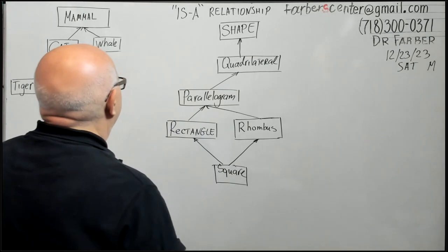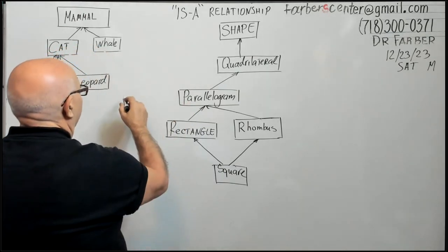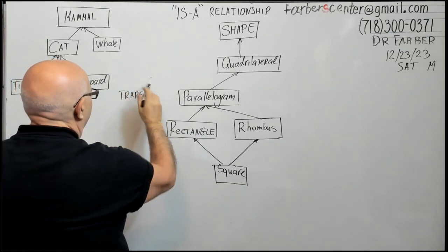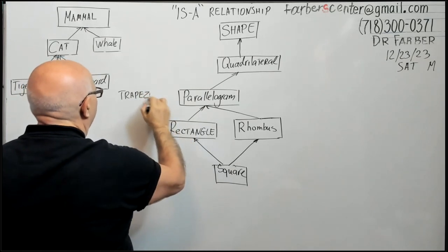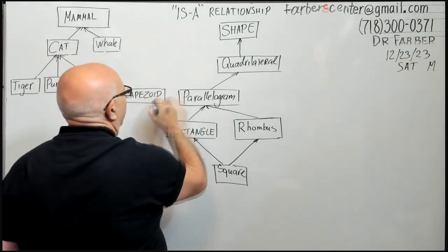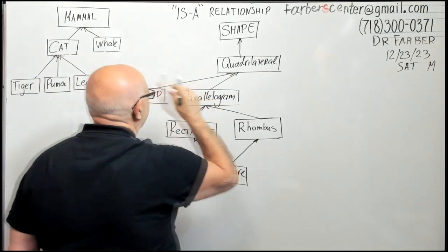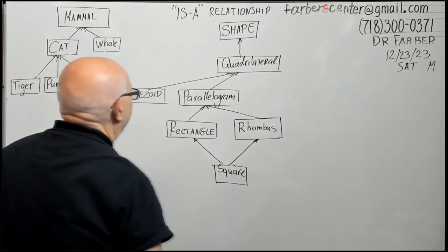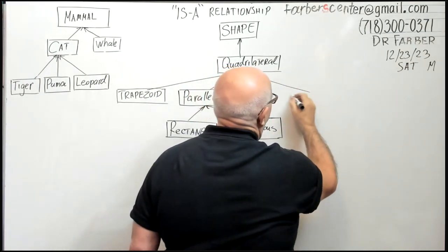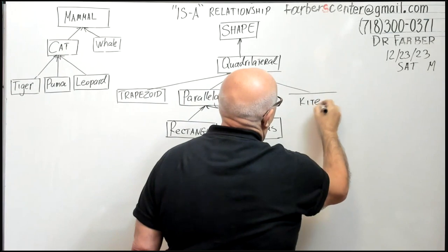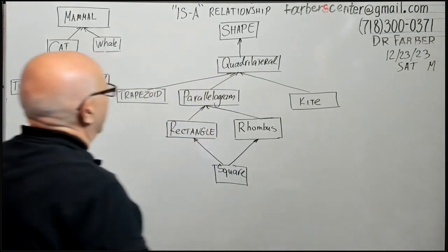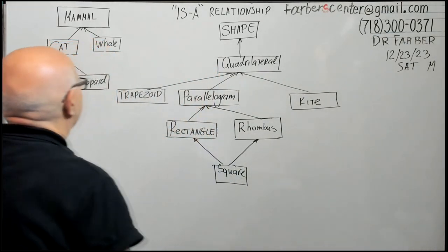You can expand this. For instance, here we have another one, trapezoid. There's nothing to do with the parallelogram and rhombus. Or kite, another one. This is just a fragment of this. You can have different shapes.